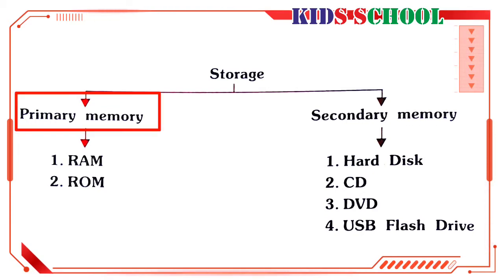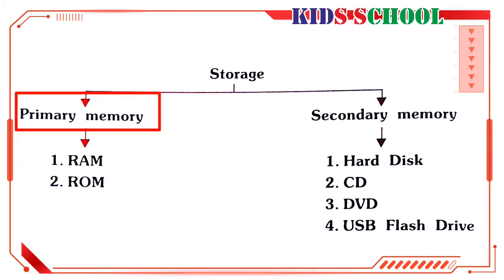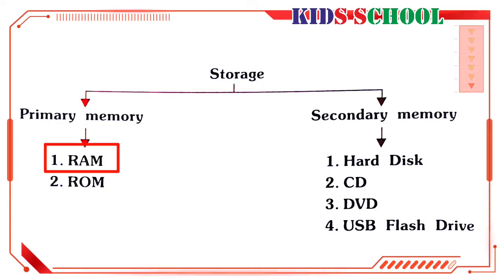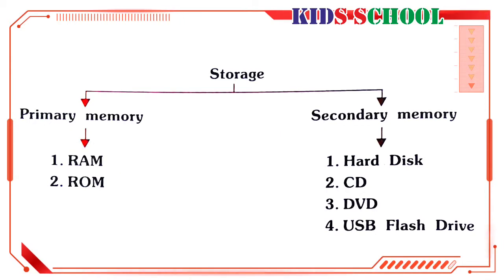There are two kinds of primary memory: RAM (Random Access Memory) and ROM (Read-Only Memory). Dear students, RAM is a temporary memory. Data, programs, or information is stored in RAM in the form of electrical pulses.